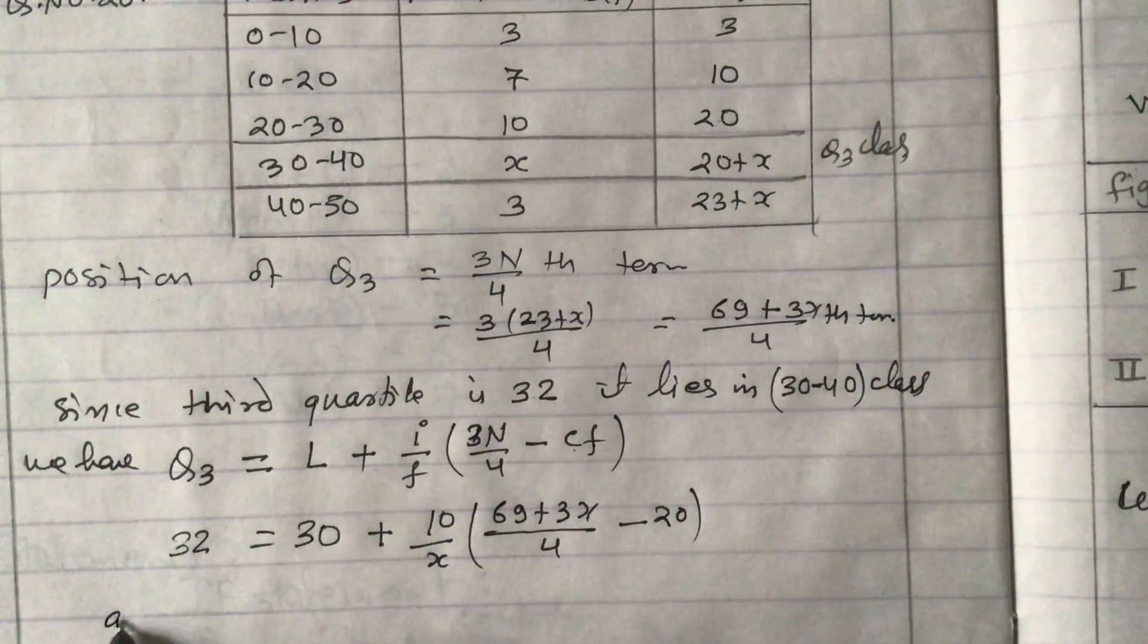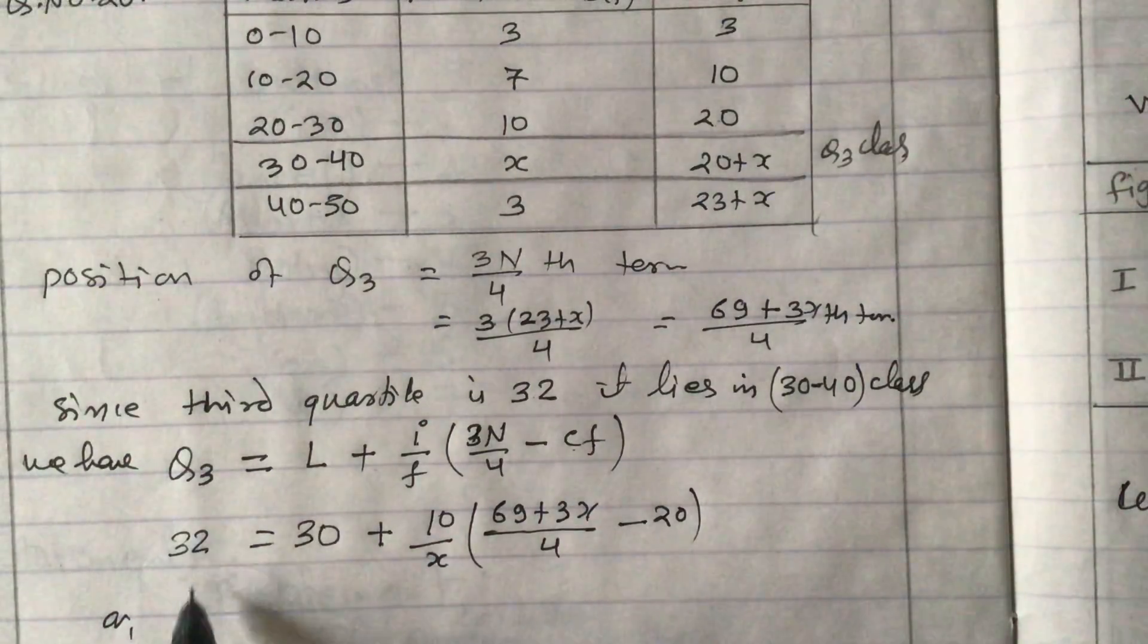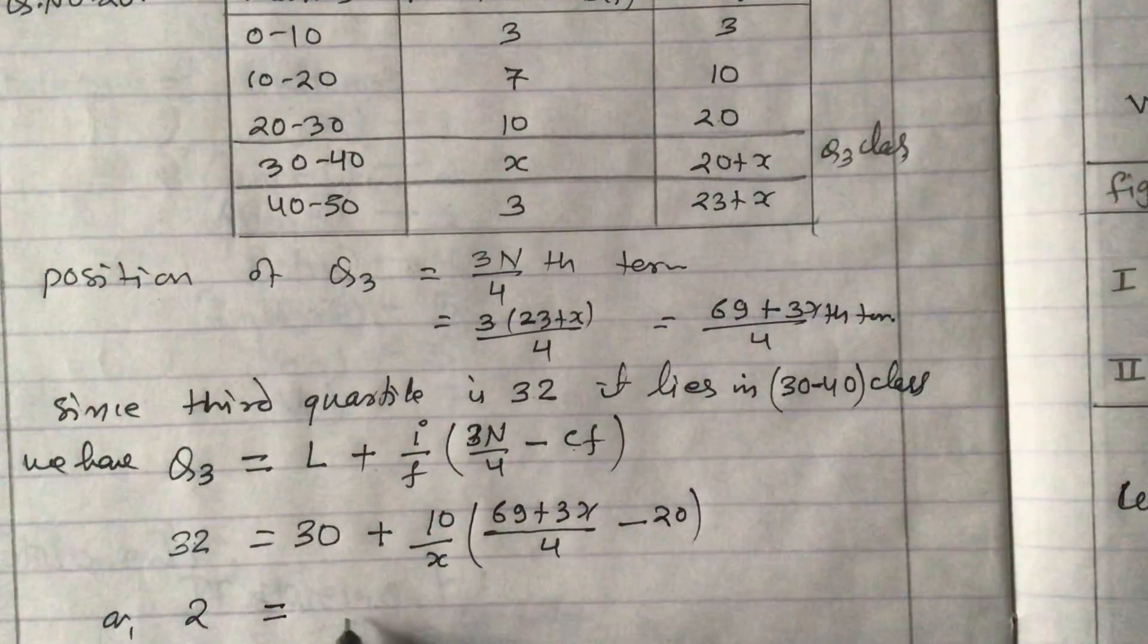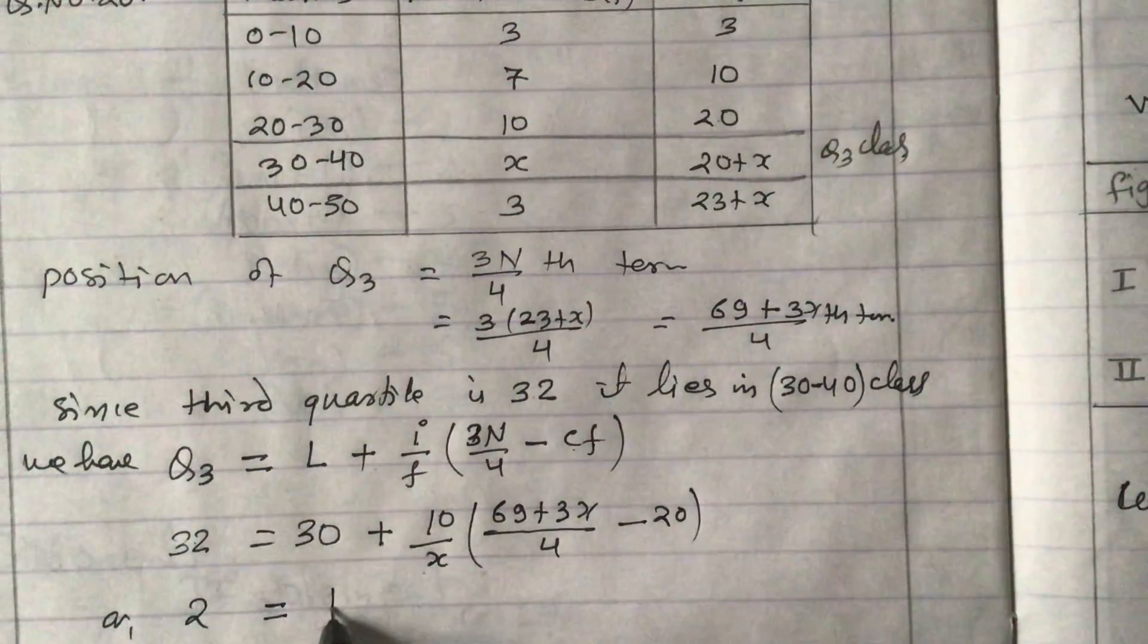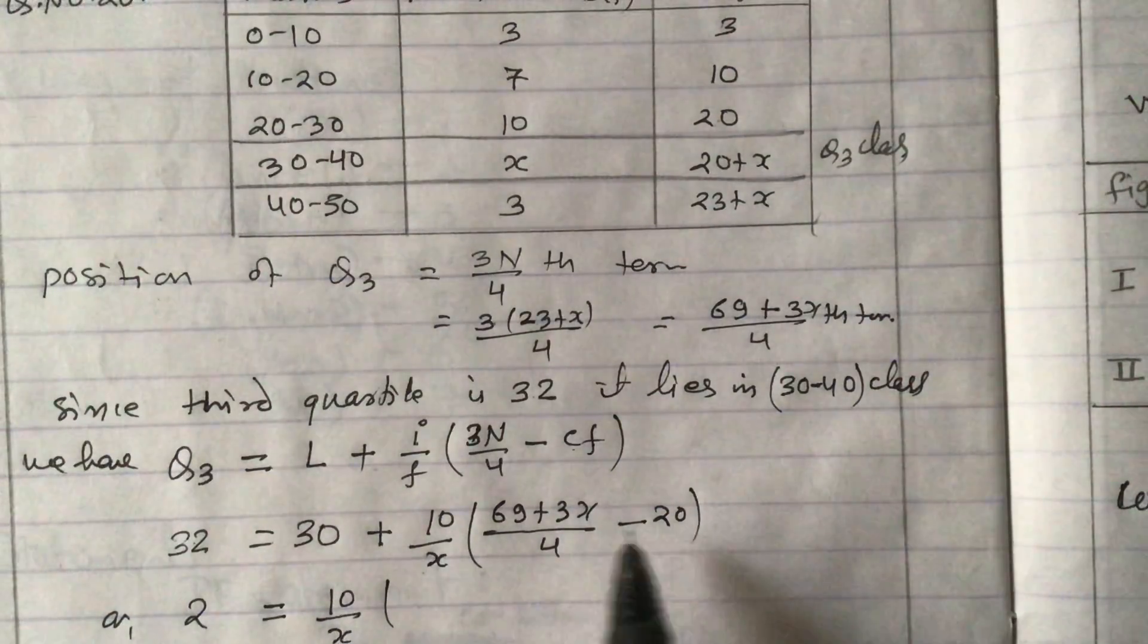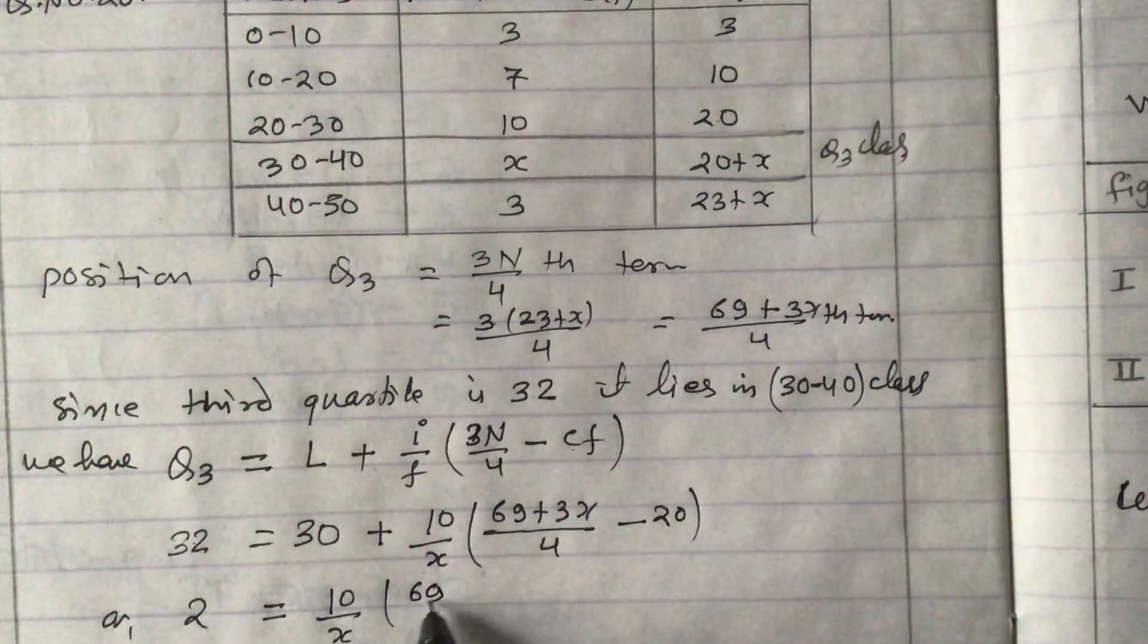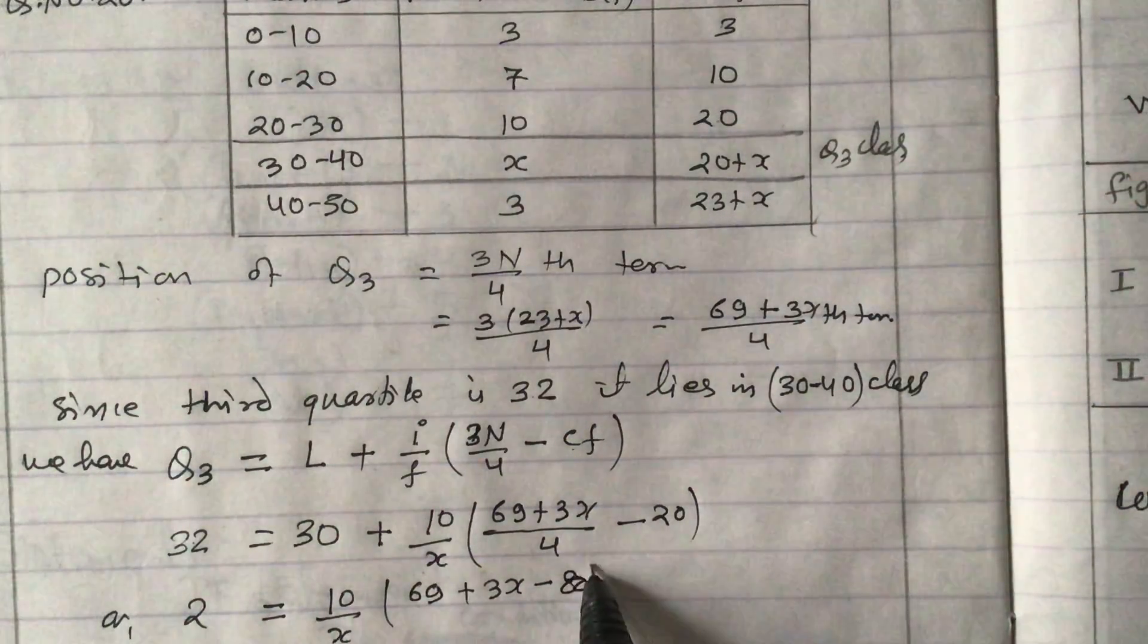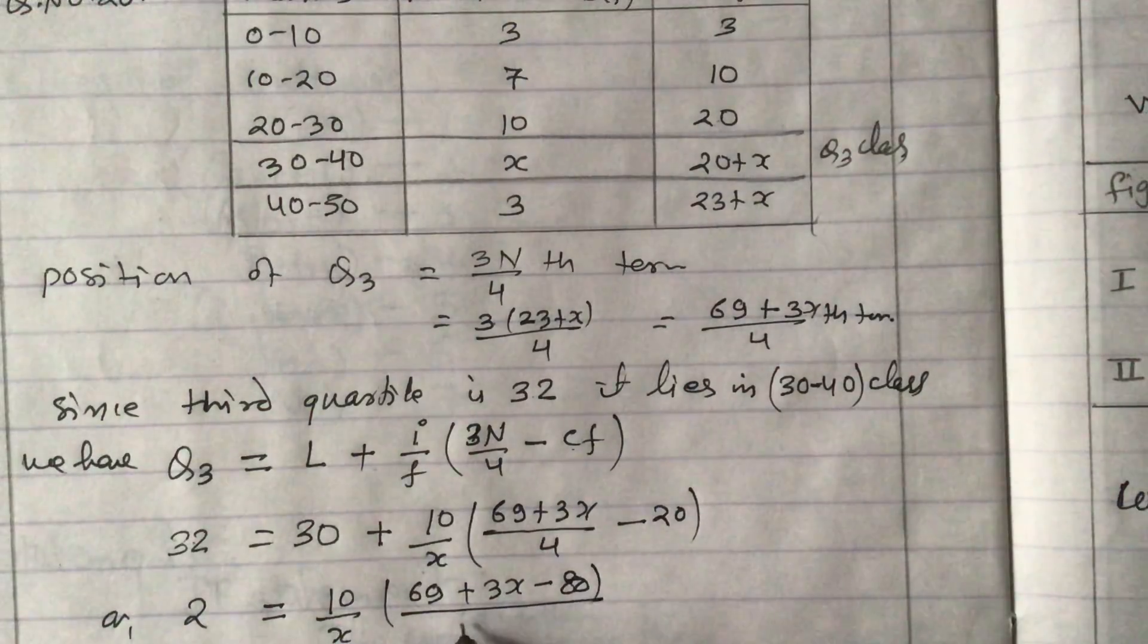So this is 32. Now we can transpose 30 to this side. We will get 32 minus 30 equals 2, equals 10 by x bracket. This one we can take LCM: (69 plus 3x minus 80) divided by 4.